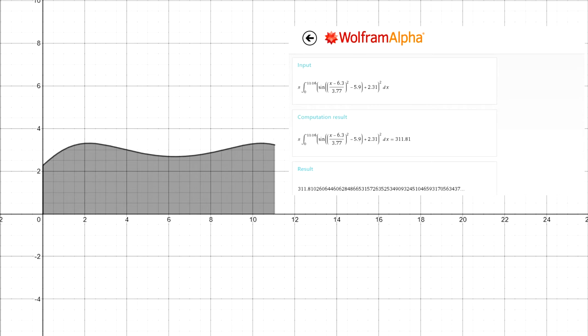However, Wolfram Alpha couldn't give us a step-by-step explanation of how to calculate it. Therefore, we just have the volume, which is 311.81 cubic centimeters.